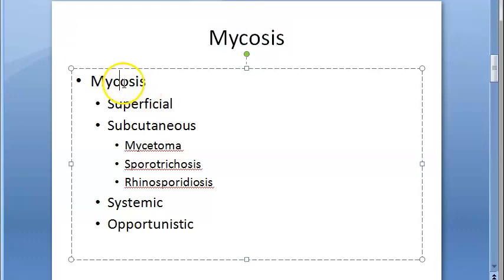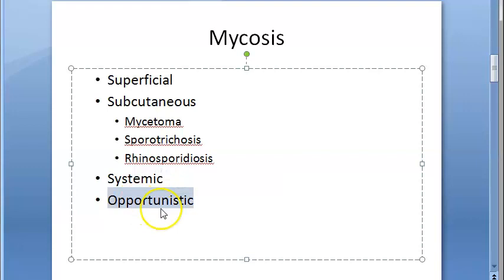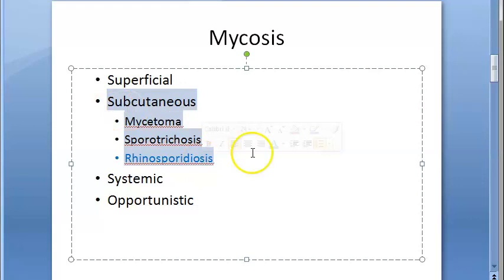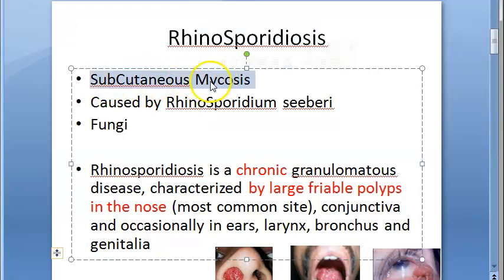There are many types of mycosis: superficial mycosis, subcutaneous mycosis, systemic mycosis, and opportunistic mycosis. An example of superficial mycosis is dermatophytosis. Under subcutaneous mycosis you have rhinosporidiosis, mycetoma (Madura foot), and sporotrichosis caused by Sporothrix. So rhinosporidiosis is a subcutaneous mycosis.